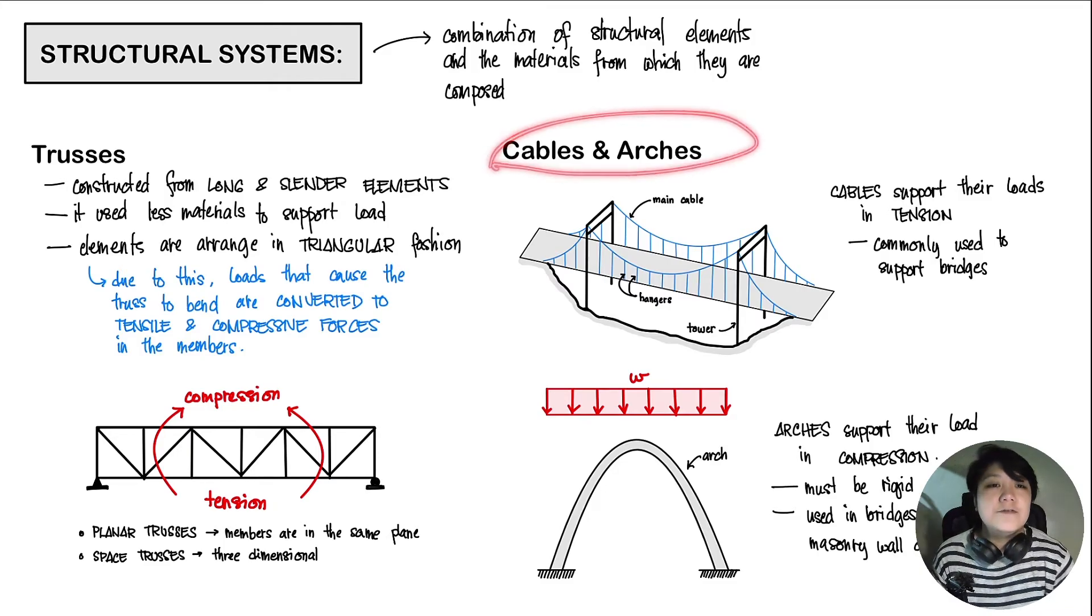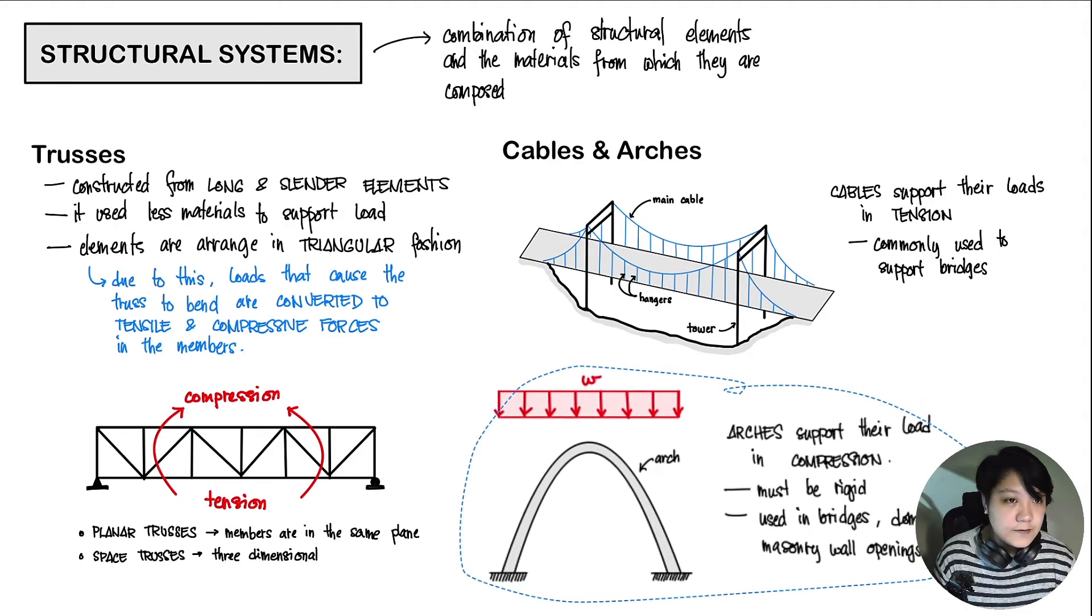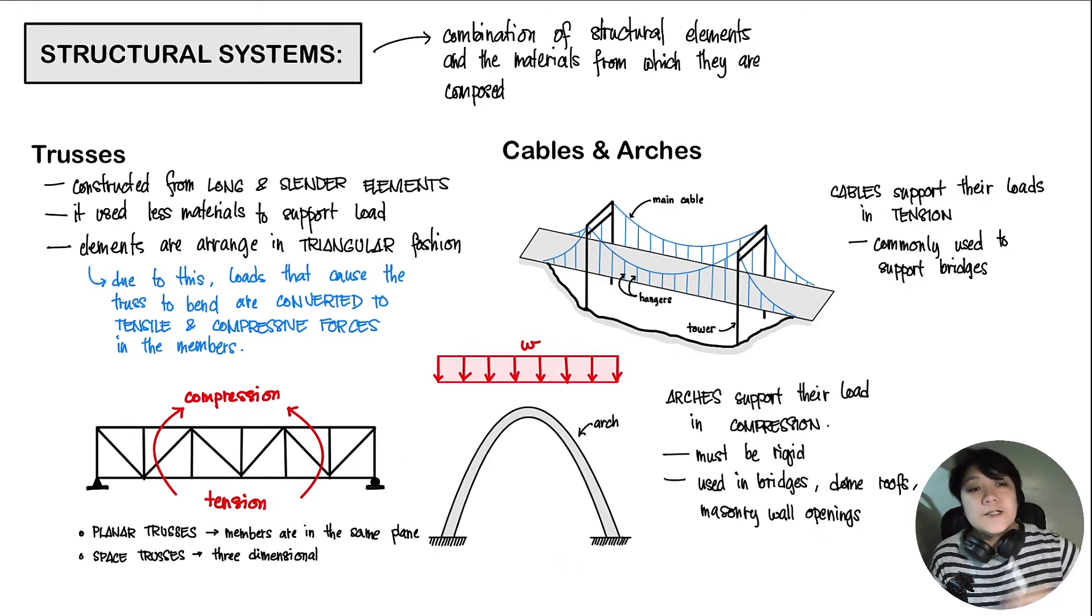The next structural system that we have is the cables and arches. Cables support their loads in tension, while our arches support their loads under compression. Arches support their loads in compression. For the cables, these are usually used to support long-span bridges. And then for the arches, this is also used in bridges. It can also be used in dome roofs and in masonry wall openings. The difference is our arches are rigid, while our cables are pretty much flexible.